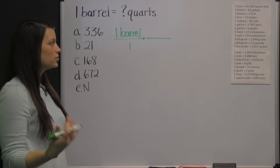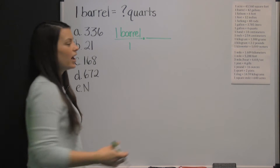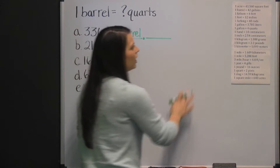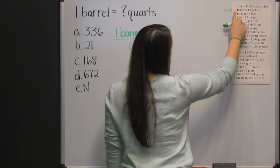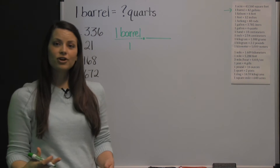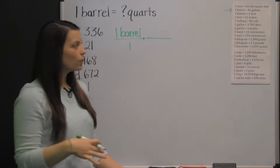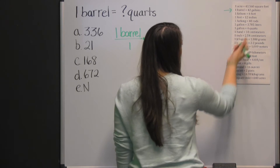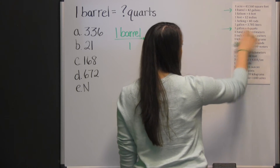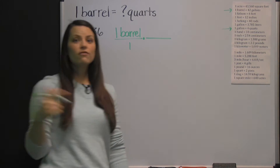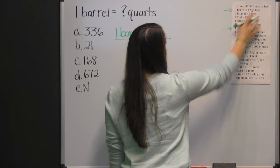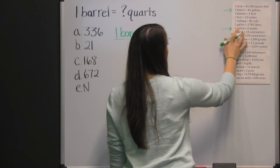We're going to look in our chart, which you'll have on the CAST exam — you will have the conversions. We're looking for barrels and quarts. I see the conversion factor that says one barrel is 42 gallons, but I'm not trying to convert to gallons; I'm trying to convert to quarts. We keep looking and see another conversion factor for converting gallons to quarts. So I'm going to convert twice.